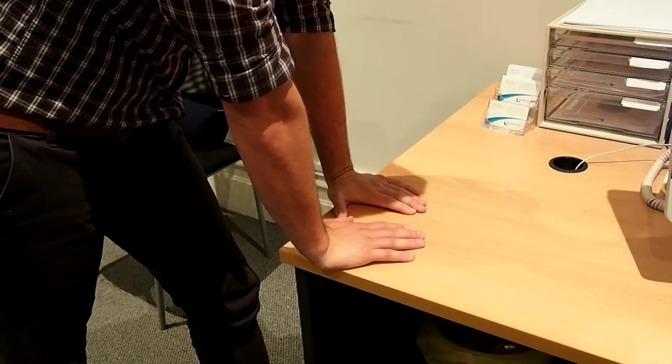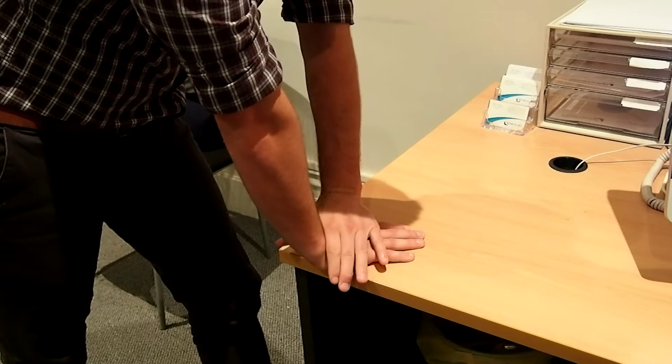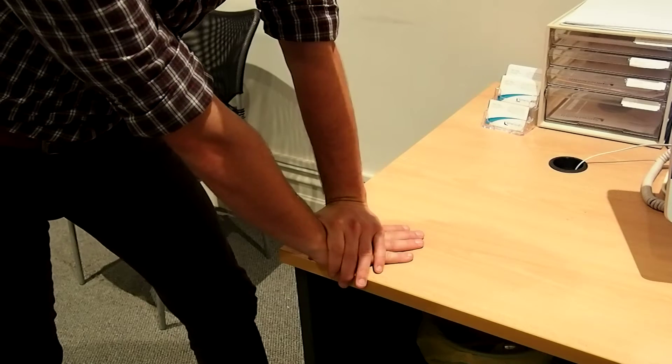Mackenzie Method wrist extension plus traction. To apply this exercise, apply some traction with your other hand onto the injured wrist pulling down.